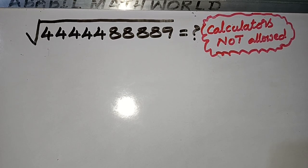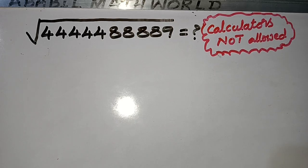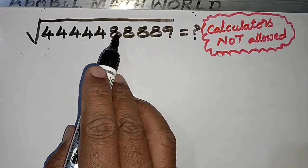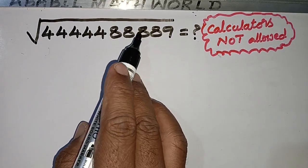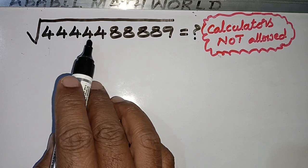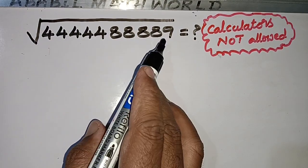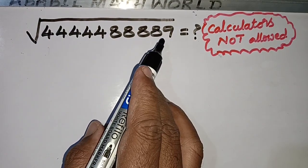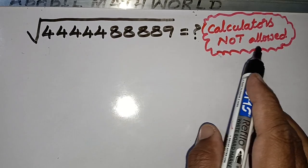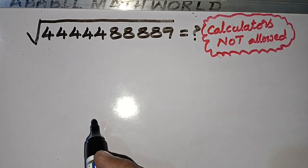Hello, welcome to Avalid Math. Today we are going to find an interesting square root. It is the square root of 4,4,4,4,4,8,8,8,9 — that means five 4s, four 8s, and the last digit is 9. This square root we have to calculate and calculators are not allowed.